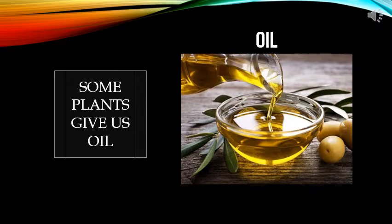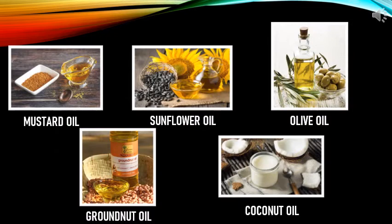Some plants give us oil. Here are some examples of different kinds of oil. Number one is mustard oil. Number two, sunflower oil. Number three, olive oil. Number four, groundnut oil. And number five is coconut oil. All these kinds of oils we use in our cooking.